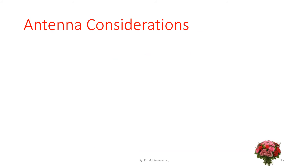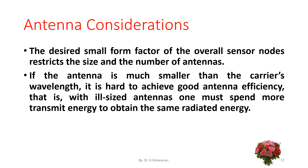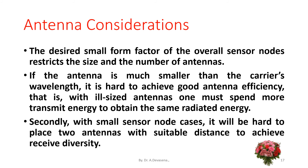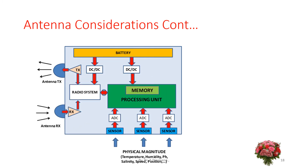Antenna considerations: the desired small form factor of the overall sensor node restricts the size and number of antennas. If the antenna is much smaller than the carrier's wavelength, it is hard to achieve good antenna efficiency — with ill-sized antennas, one must spend more transmit energy to obtain the same radiated energy. With small sensor node cases, it will also be hard to place two antennas with suitable distance to achieve receive diversity.